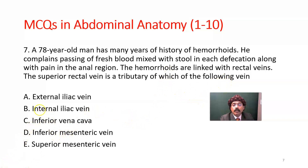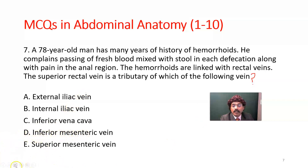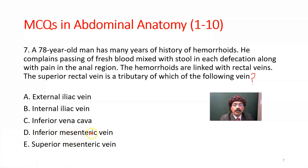Options: external iliac vein, internal iliac vein, inferior vena cava, inferior mesenteric vein, or superior mesenteric vein. The correct answer is the inferior mesenteric vein — D. The superior rectal vein is a tributary of the inferior mesenteric vein.